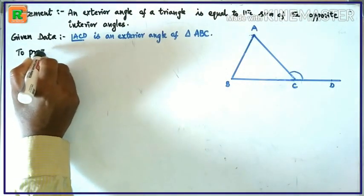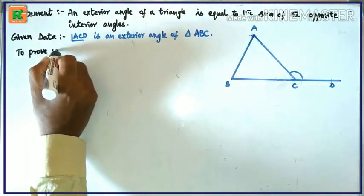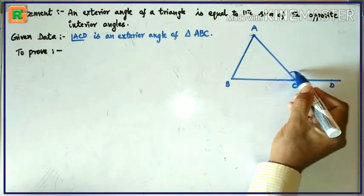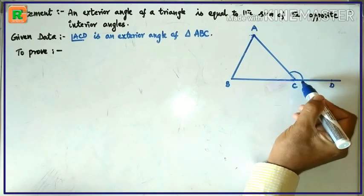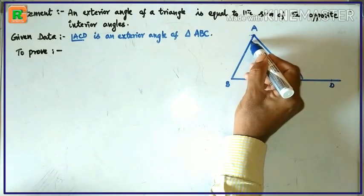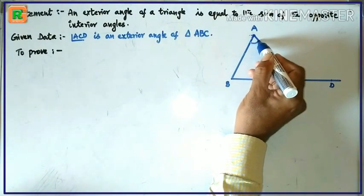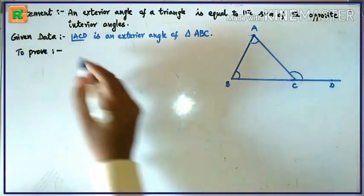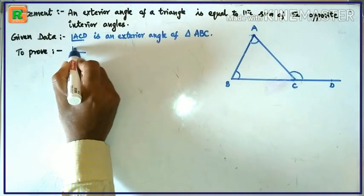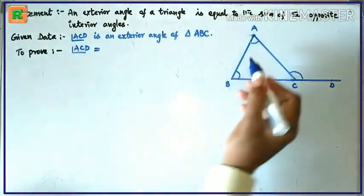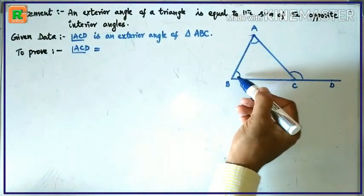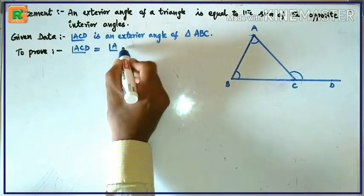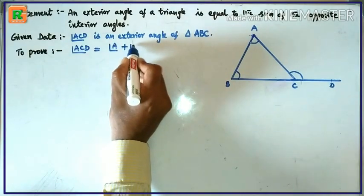Given: angle ACD is an exterior angle of triangle ABC. To prove: this exterior angle is equal to the sum of the opposite interior angles, that is, angle ACD equals angle A plus angle B.